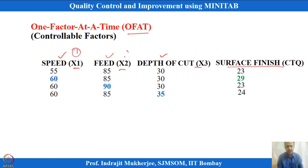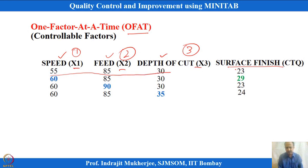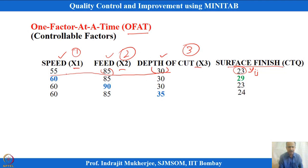Starting with the first combination—speed 55, feed 85, depth of cut 30—the y observation is 23. We want to maximize surface finish. Keeping feed at 85 and depth of cut fixed at 30, we change the speed from 55 to 60. When we change this one factor, what we observe is that surface finish improves to 29, which is an improved position.